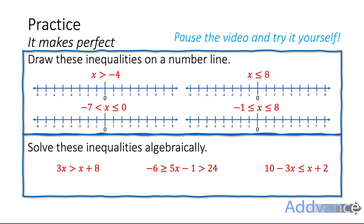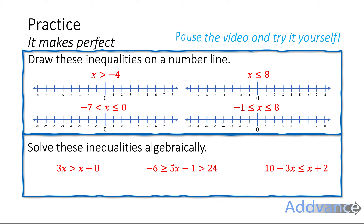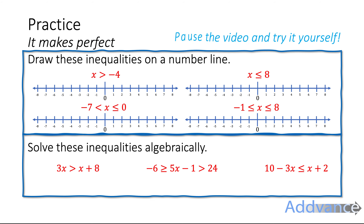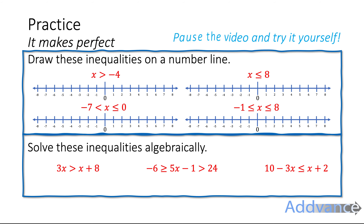Now some practice questions for you to try. Draw the top four on a number line, making sure you're drawing them correctly. Then solve the inequalities at the bottom algebraically — rearrange step by step and make sure you get the right answer. Once you have your answers, check them by selecting a number in your final answer and putting it back into the original equation. I'll reveal the answers in 3, 2, 1.